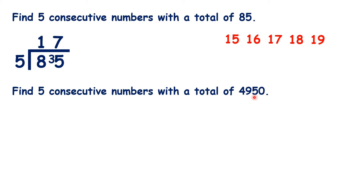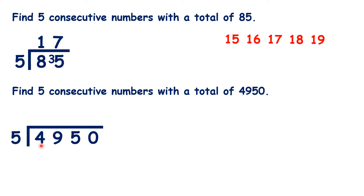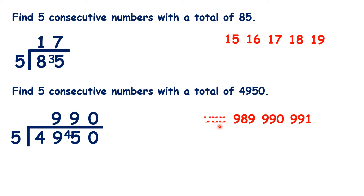Pause the video and see if you can use the same method to find five consecutive numbers with a total of 4,950. We start by dividing 4,950 by 5, which gives us 990. So that's our middle number. The number before must be one less, the number after must be one more, the first number must be two less, and the last number must be two more. So if you add up 988, 989, 990, 991 and 992, you'll get 4,950.